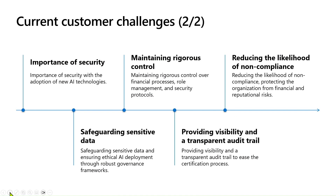Continuing on the crucial challenges that customers face when integrating AI technologies, security is paramount, specifically as organizations adopt these advanced tools. It is essential to safeguard sensitive data and ensure that AI is deployed ethically, which can be achieved through a robust governance framework. Additionally, maintaining strict control over financial processes and security protocols is vital to prevent any potential breaches. Transparency is another key aspect — providing a clear audit trail not only facilitates compliance but also builds trust with stakeholders. Lastly, reducing the risk of non-compliance protects the organization from both financial and reputational damage. These challenges highlight the need for a comprehensive strategy to navigate the complexities of AI adoption and security effectively.